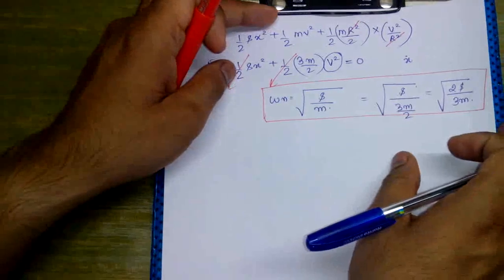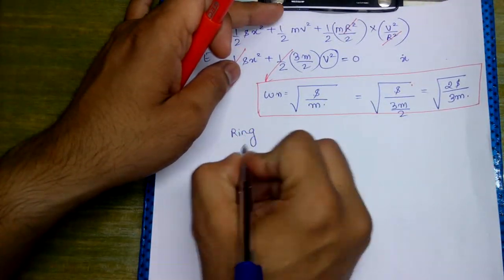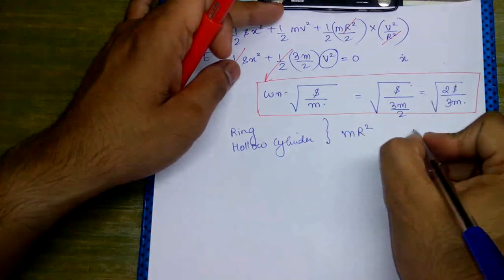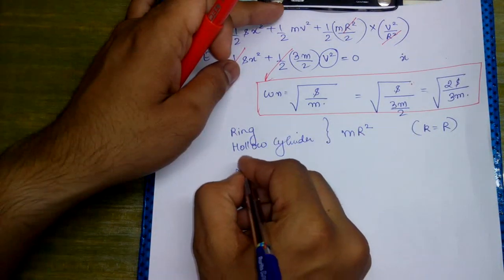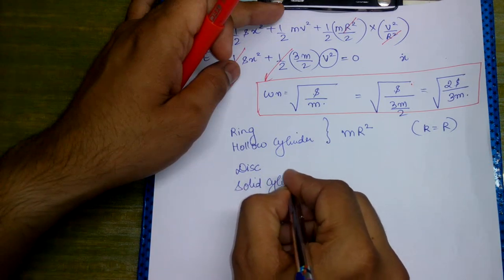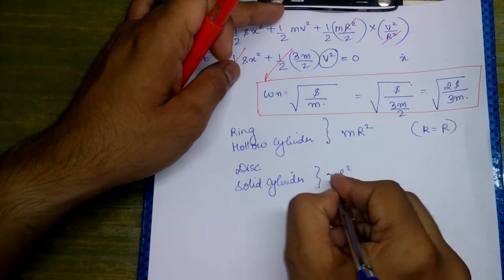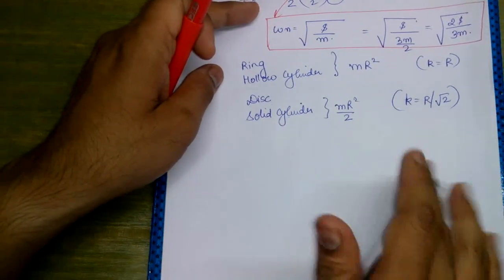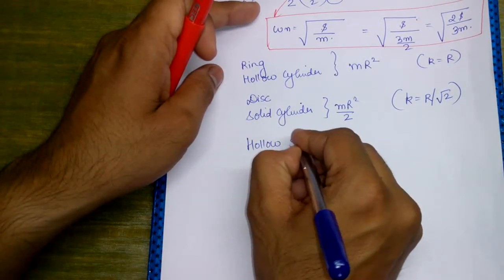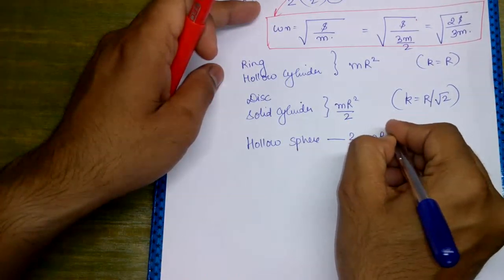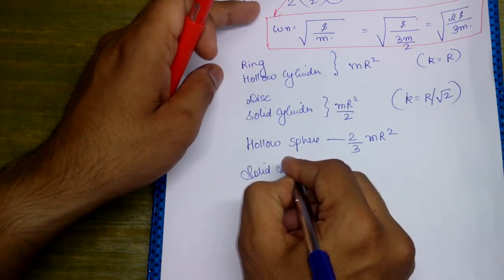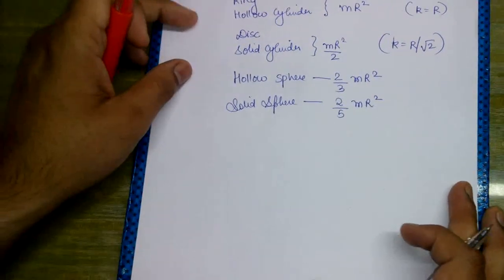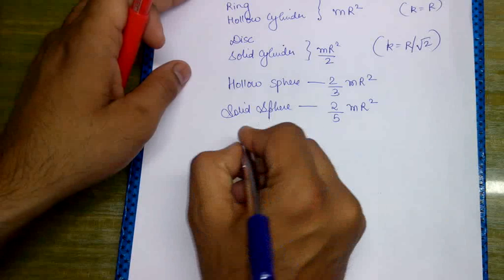For different structural shapes: if instead of a solid disc, a ring or hollow cylinder is given, then I = MR² (radius of gyration equals R). For a hollow sphere, I = (2/3)MR². For a solid sphere, I = (2/5)MR².